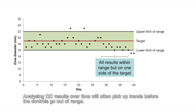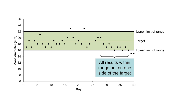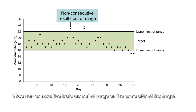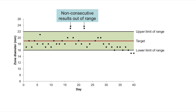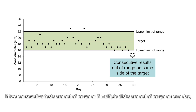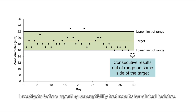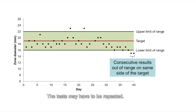Analyzing QC results over time will often pick up trends before the controls go out of range. If two non-consecutive tests are out of range on the same side of the target, susceptibility test results for clinical isolates may still be reported, but investigation is required. If two consecutive tests are out of range, or if multiple discs are out of range on one day, investigate before reporting and the tests may have to be repeated.